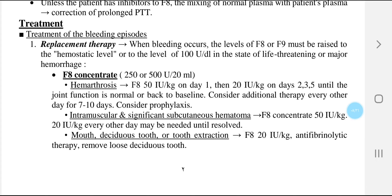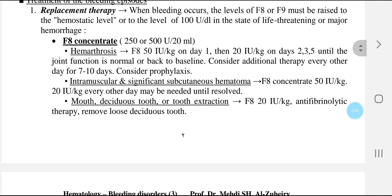Continue until joint function is normal or back to baseline. Consider additional therapy every other day for 7 to 10 days and consider prophylaxis. In intramuscular and significant subcutaneous hematoma, give factor 8 concentrate 50 international units per kg, then 20 international units per kg every other day until resolved. In mouth bleeds or tooth extraction, give factor 8 at 20 international units per kg.